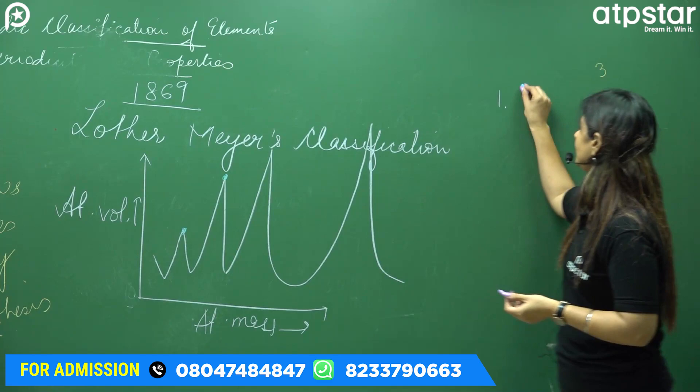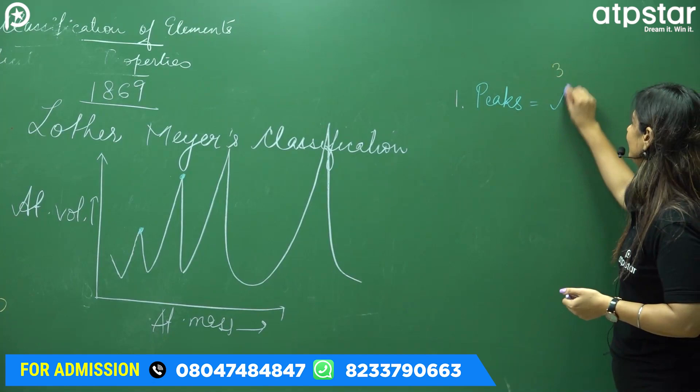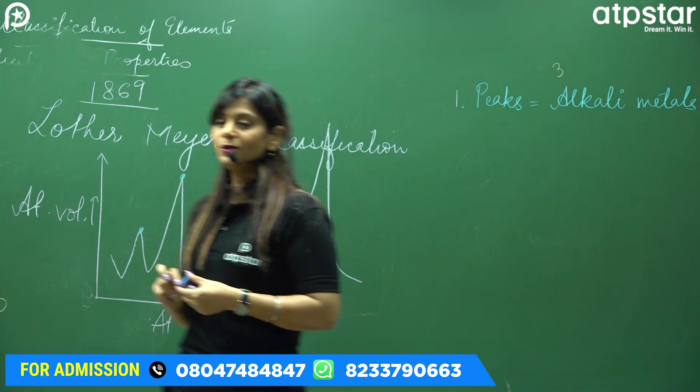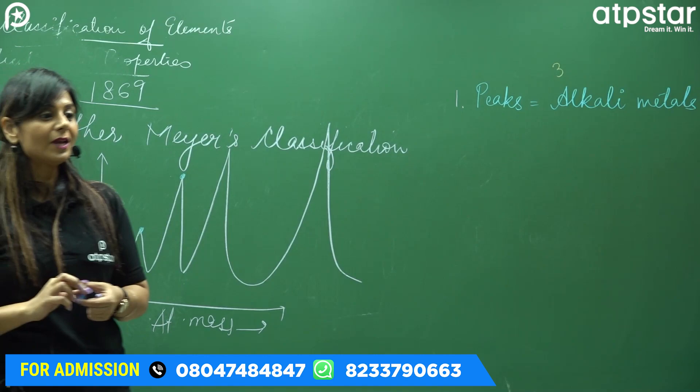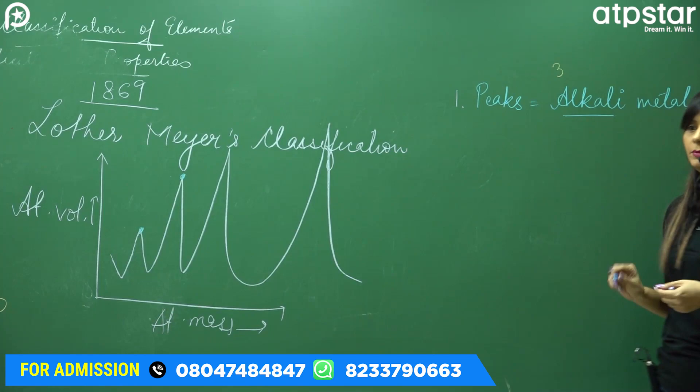The first position is the peaks. Alkali metals are at the peaks. What are the alkali metals? The alkali word is related to basics. Tell me the alkali metals — first group, leaving hydrogen because they are not metals: Lithium, Sodium, Potassium, Rubidium, Cesium. These are alkali metals. Why do they say alkali?